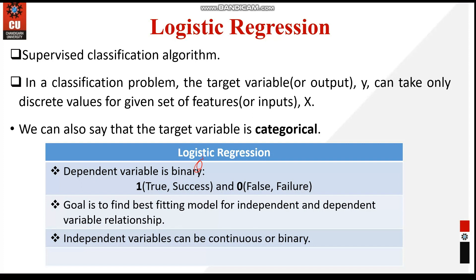In logistic regression, the output is a categorical variable. The output will be a discrete or categorical value — it can be either yes or no, one or zero, true or false, and so on. These are probabilistic values. Logistic regression is very similar to linear regression except in how we use it.